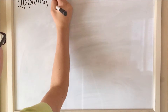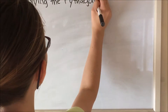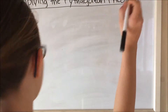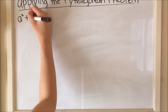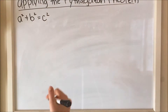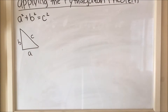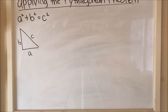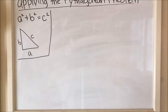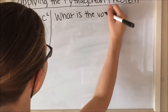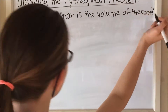Now that you know the basics of the volume of a sphere, cone, and cylinder, I'm going to show you something a little more complicated: applying the Pythagorean theorem to the volume of a cone. If you're not familiar with this, it is basically how to find either of the three sides of a right triangle. It is a² + b² = c², where a is the base, b is the height, and c is the hypotenuse.